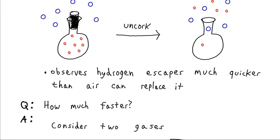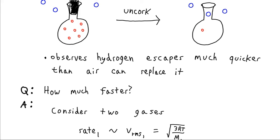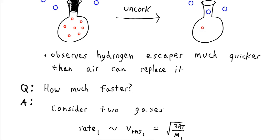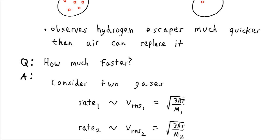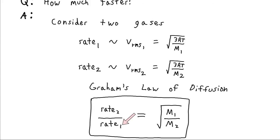How much faster is the hydrogen moving than the air molecules? We can work this out if we consider two gases. We've established that the average velocity of a gas is equal to the square root of 3 times the gas constant times the temperature divided by its molecular weight. And certainly the rate at which the gas moves out of the container is going to be proportional to its velocity. If it moves faster, it will escape faster. If it moves slower, it will escape slower. So this will be our rate 2 for a gas of molecular weight 2. And if we divide these two equations, we get Graham's law of diffusion. Rate 2 over rate 1, the 3 and the R and the T will all cancel out. And we'll just be left with the square root of M1 divided by the square root of M2.